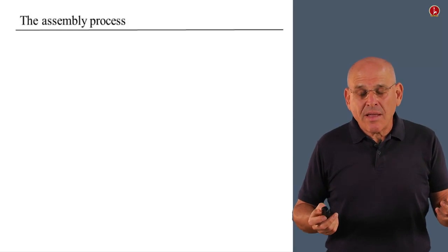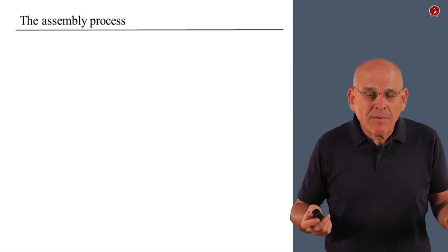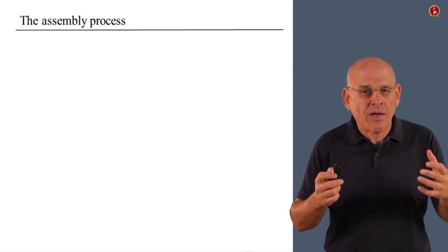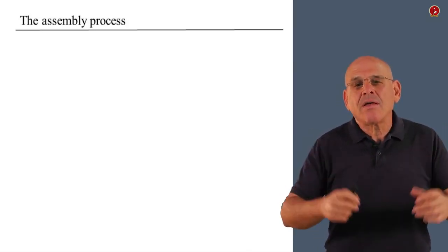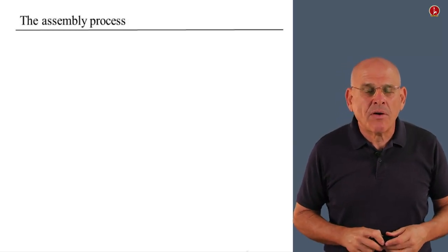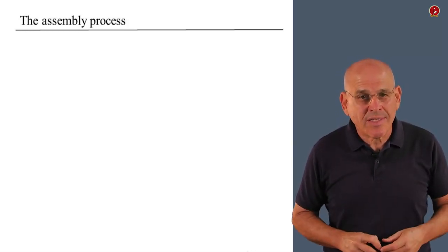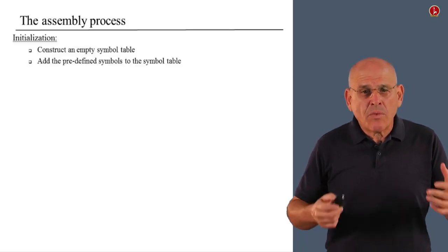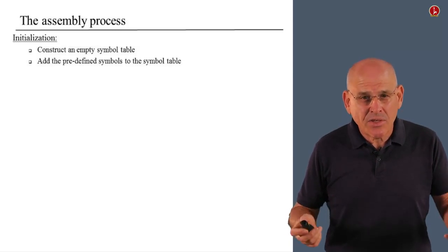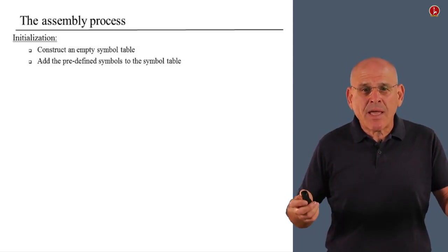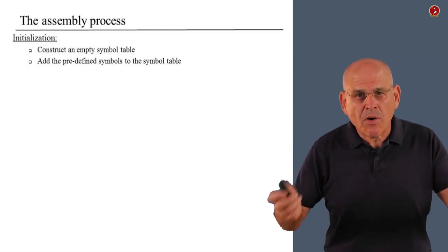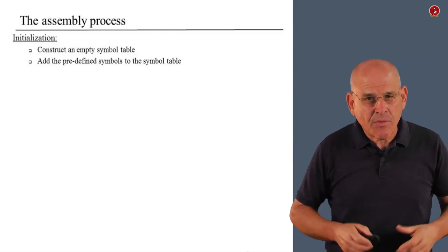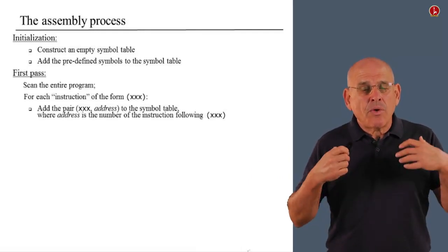All right. So, with that in mind, we can now describe the overall assembly process. We have reached a point where we can actually lay out the algorithm according to which the assembler can be developed. So, here we go. First of all, we do some initialization. We construct an empty symbol table, and we get ready to process the input file. We add the predefined symbols to the symbol table, and then we go to work.